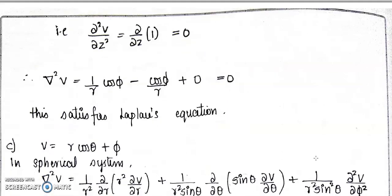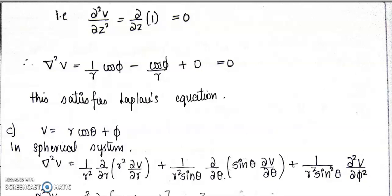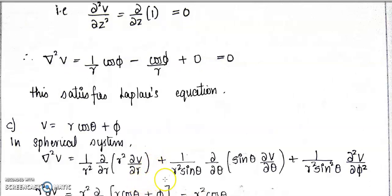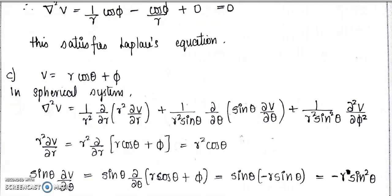For Case 3, V = R cosθ + φ in the spherical coordinate system. The Laplacian del²V in spherical coordinates is: (1/R²)·∂/∂R(R²·∂V/∂R) + (1/R² sinθ)·∂/∂θ(sinθ·∂V/∂θ) + (1/R² sin²θ)·∂²V/∂φ². We will find individual terms — R²·∂V/∂R, sinθ·∂V/∂θ, and ∂²V/∂φ² — and then substitute and take the sum.